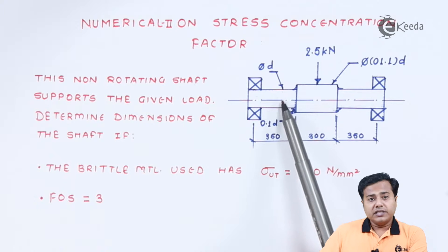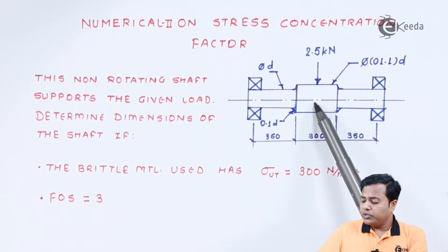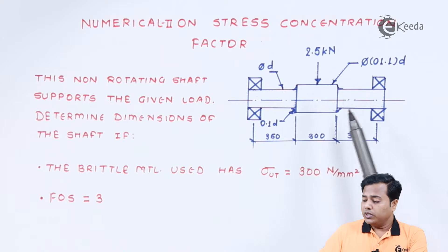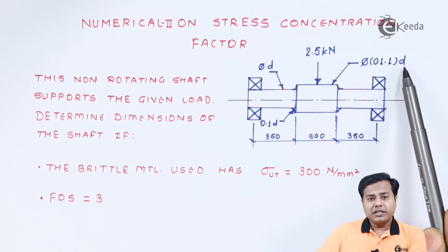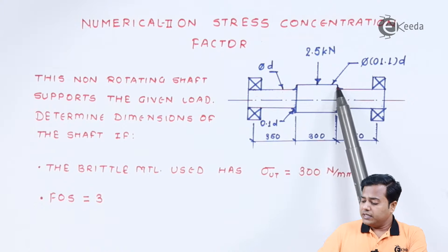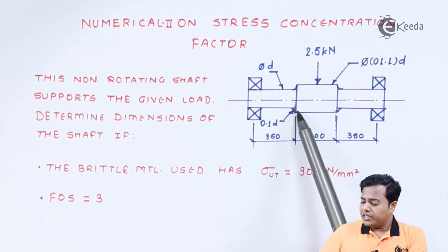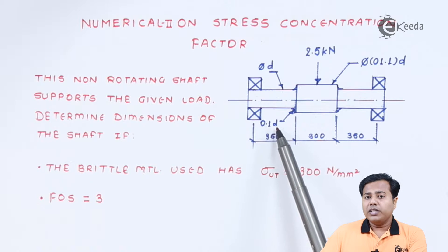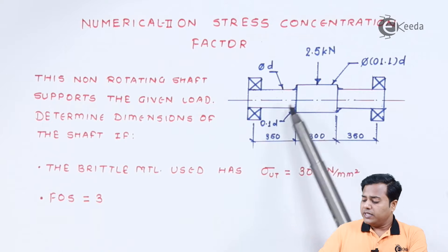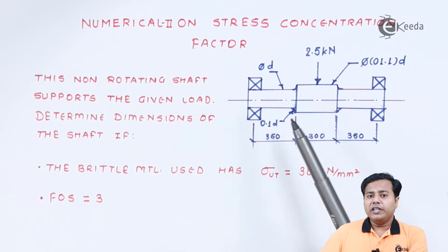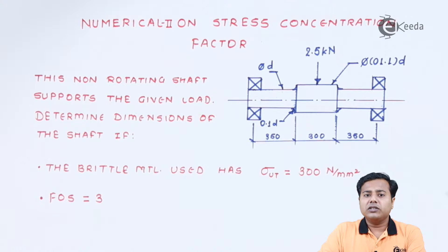You can see the dimensions of the diameter of the shaft are given in terms of the letter D where if this diameter is D, this middle portion diameter has been increased to 1.1 times the diameter D, whereas the fillets given at each end has the radius 0.1 times the diameter. So with this particular specification we need to identify the areas or the regions which will be susceptible to the failure or fatigue failure.